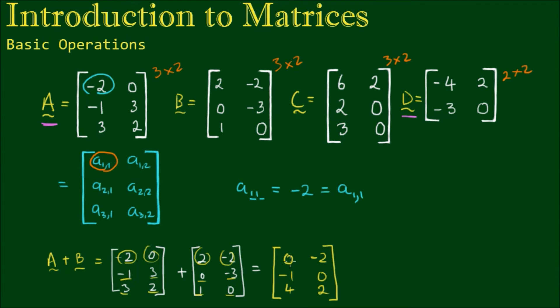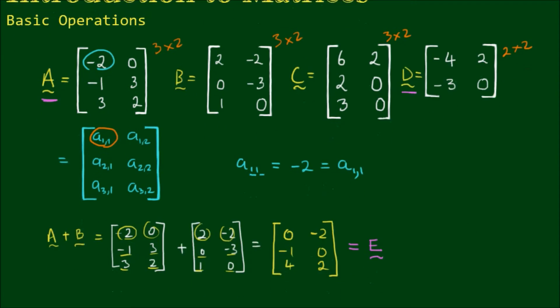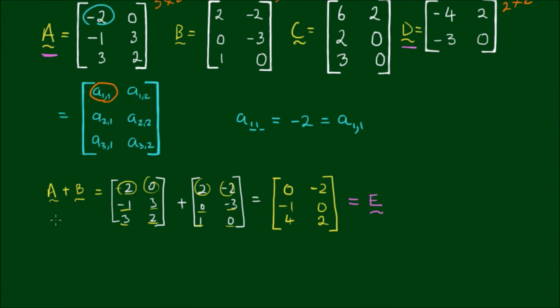Okay, so let's call this new matrix that we've formed from the addition of A and B, let's call this matrix E. Now what if we were to reverse this operation and add matrix B to matrix A? Would we still expect to get the same answer as before and produce matrix E? Well, let's see about that.